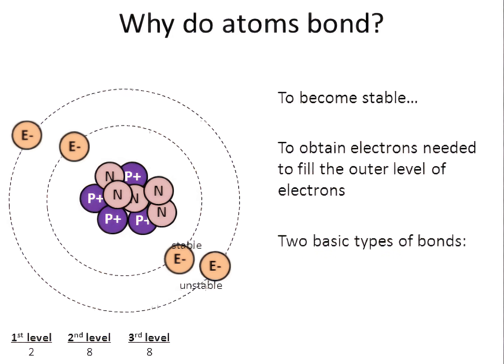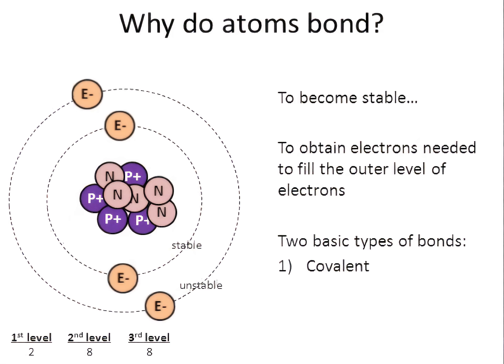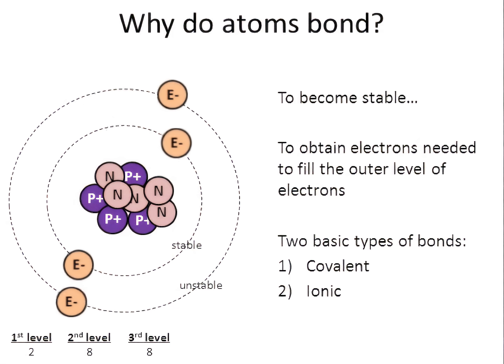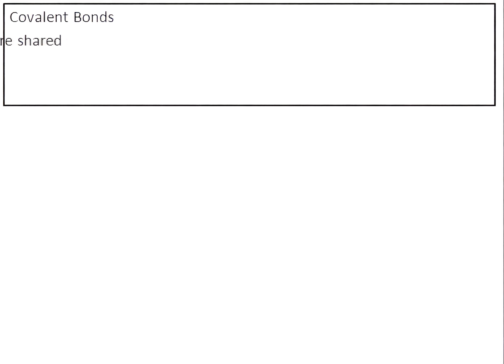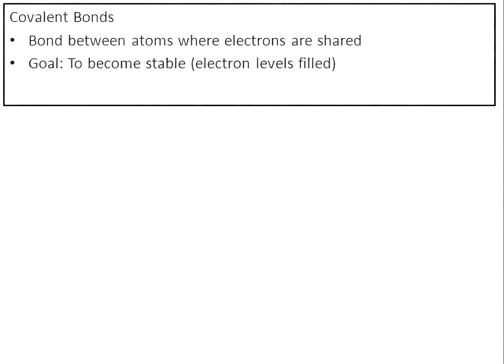There are two basic types of bonds: covalent bonds and ionic bonds. Let's go over covalent bonds first. The basic definition of a covalent bond is a bond between atoms where they share electrons. The goal of atoms forming covalent bonds is to become stable, to fill their levels of electrons. The classic example is oxygen — the oxygen we breathe, O2, is actually two atoms of oxygen stuck together.